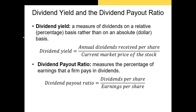Now let's talk about the two key dividend ratios. The dividend yield is the annual dividends per share divided by the current market price of the stock. In Ford's case, 15-cent quarterly dividends give a total annual dividend of 60 cents, and dividing that by the current market price gives the dividend yield. The dividend payout ratio is dividends per share divided by earnings per share, typically somewhere between 0 and 100%.